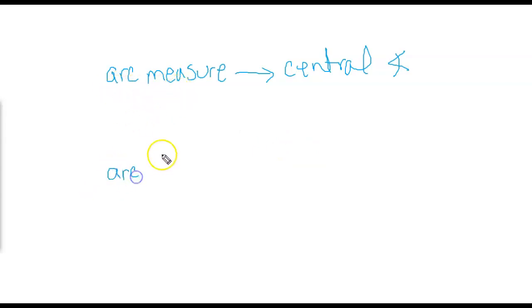But an arc length is its linear distance. And we find this as what piece of the circumference is it. So arc length is a piece of a circumference. And arc measure is a degree based on its central angle.